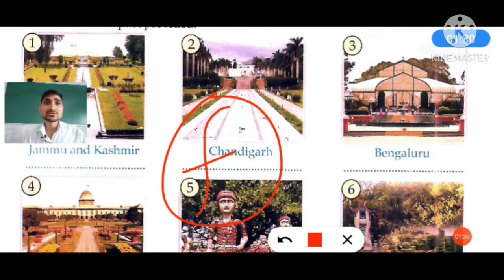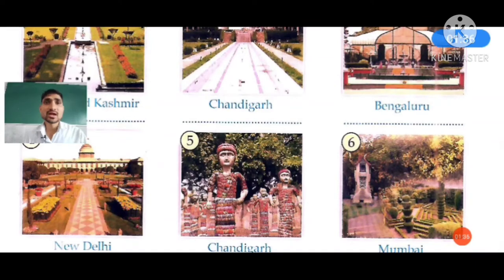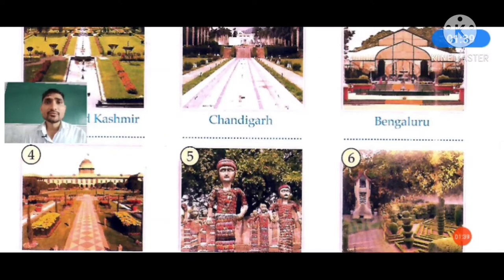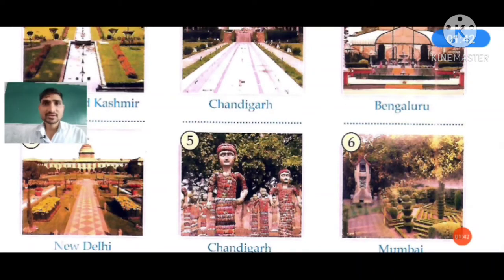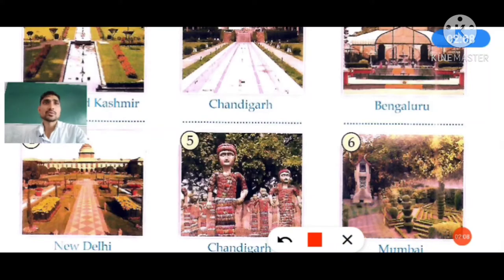Now the fourth garden is situated in New Delhi. You can see the picture — our flag is there. The name of this garden is Mughal Garden. From the help box you have to choose option B.